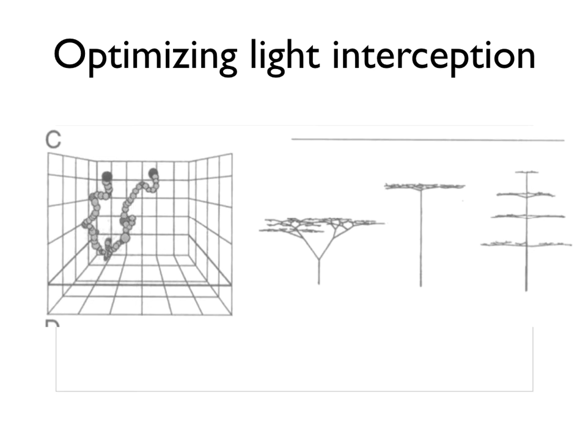If we optimize for light interception, we get a very different tree morphology. We get these broad trees that have lots of branching, and then the branches stick straight out so that the leaves intercept as much light as possible. Here we can see that there are actually more than one basically equally optimum morphologies that led to the same optimum light interception, which is why we have a couple of these little squiggles here in this morphospace.